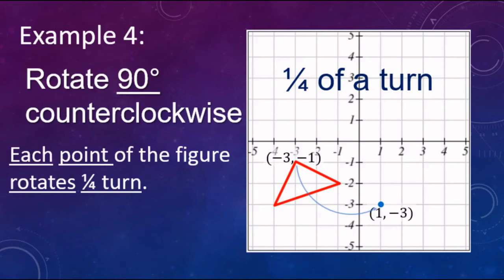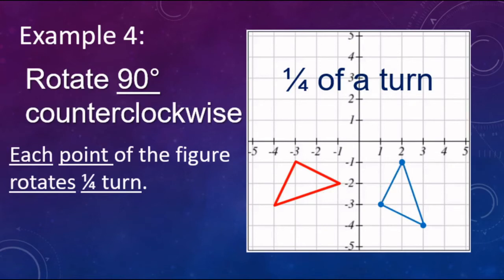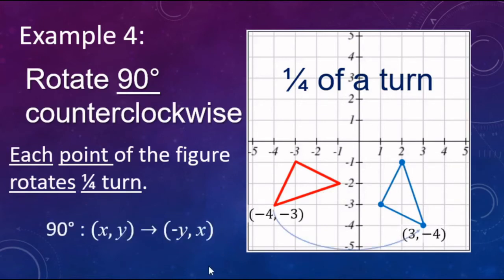Notice how the X and the Y switch places. The next vertex at four, negative three rotates to three, negative four. And the last vertex at negative one, negative two rotates to two, negative one. So the X and Y switch spots and also change signs. Connect the triangle. For 90 degree counterclockwise rotations, the X and Y switch positions, and the Y value becomes opposite what it started with.